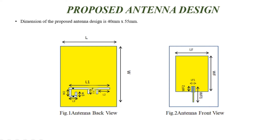When the first diode is in the on condition, the gap in the ground slot is connected via the diode, and the signal starts passing from one area to the opposite area. When the diode is on, it conducts; when off, it does not conduct. This property gives the capability of frequency reconfiguration. The total length and width of the antenna is 40 mm by 55 mm.